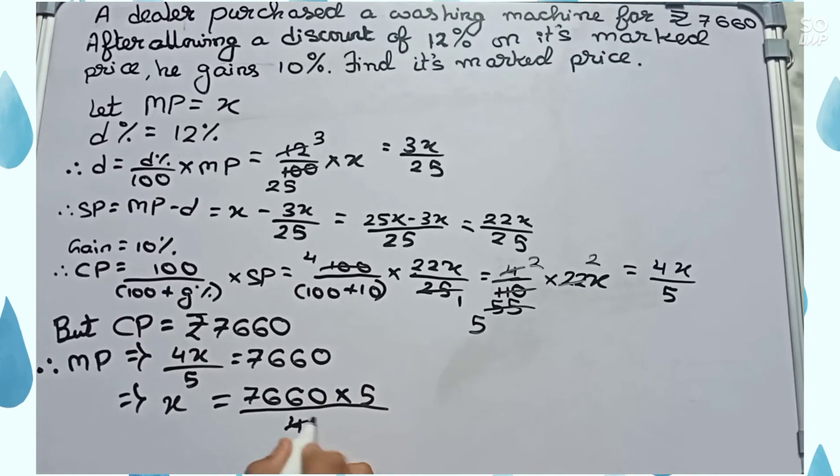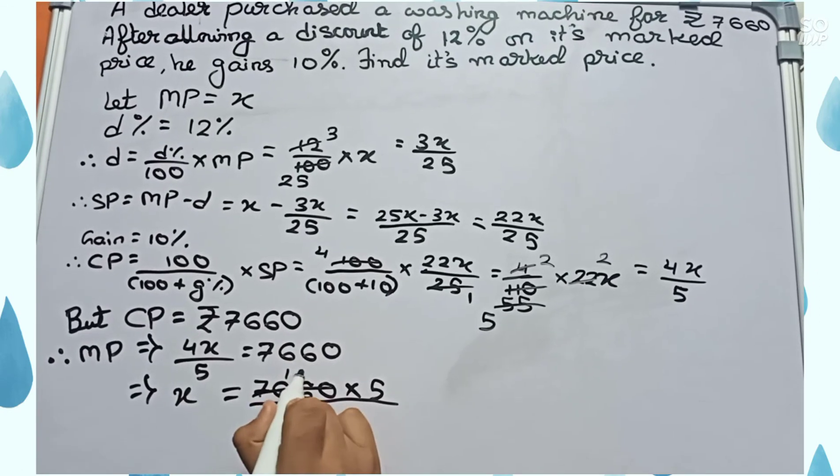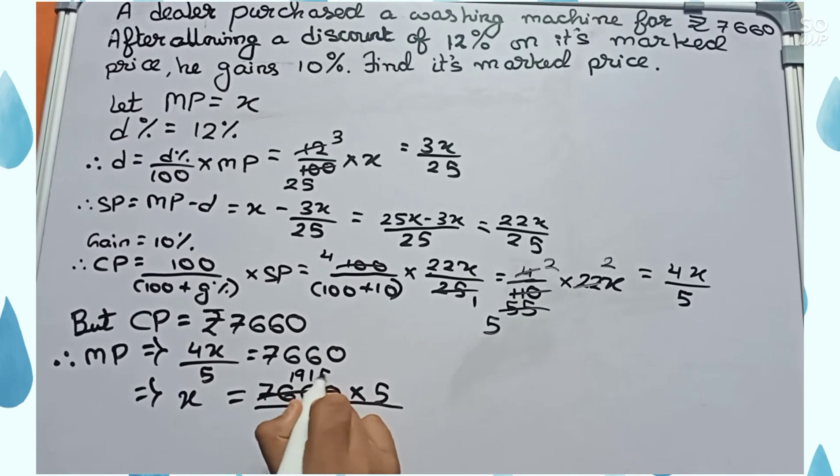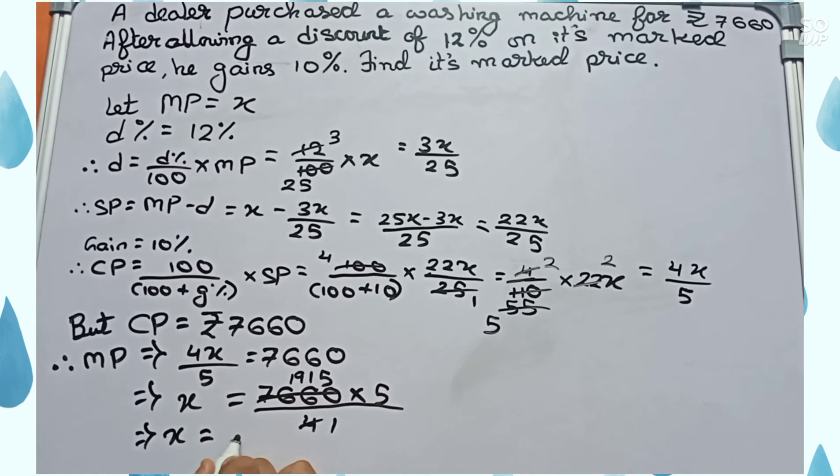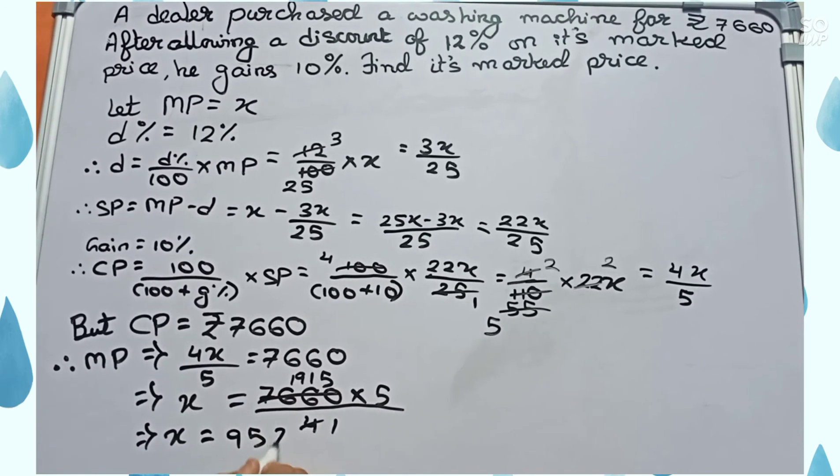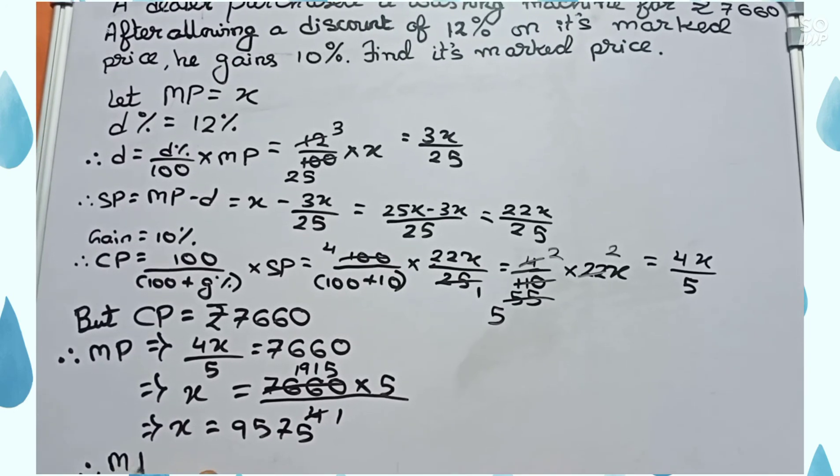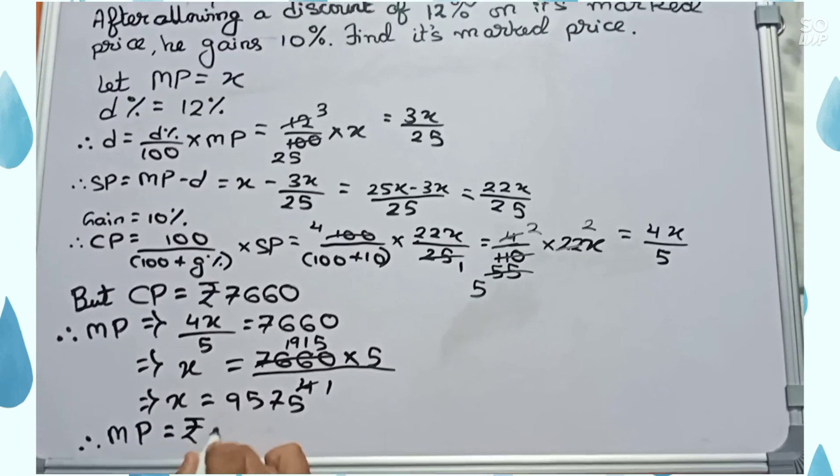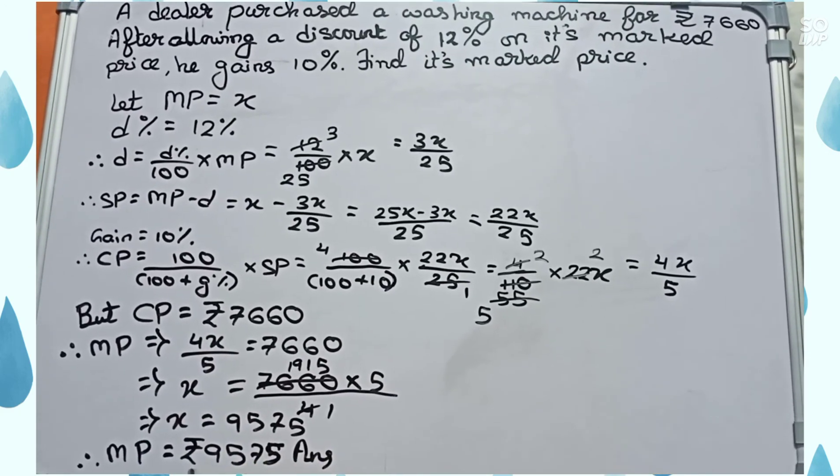Now we will cut 4 and 7660, so it will become 1915. So x equals 9575. Therefore, MP equals 9575. So this is our final answer. Thank you.